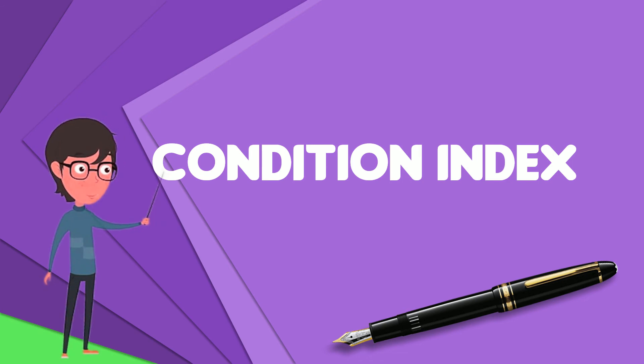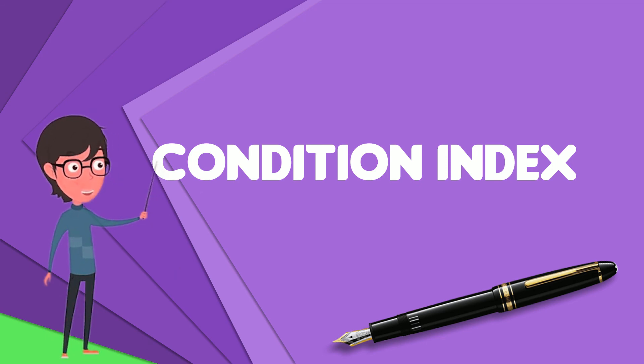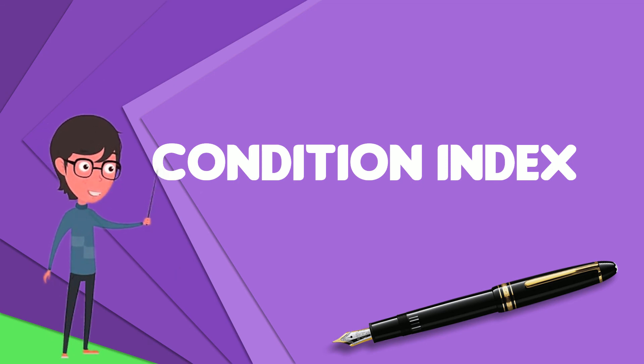The condition index for fish is a simple measurement that can be used to provide important biological information that can then be used to make better management decisions.